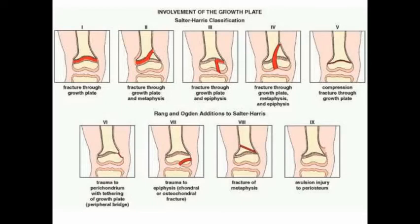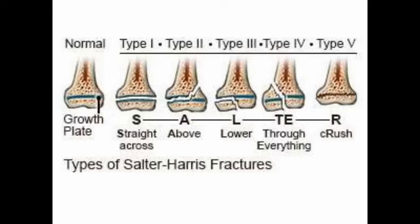This addition to the original Salter-Harris classification is not important as far as veterinary exams are concerned. The key slide to remember is the SALTER mnemonic: Type 1 — S for Straight across the growth plate; Type 2 — A for Above the growth plate; Type 3 — L for Lower to the growth plate; Type 4 — TE for Through Everything; and Type 5 — R for Rammed/crush injury, corresponding to the second letter of the word SALTER.